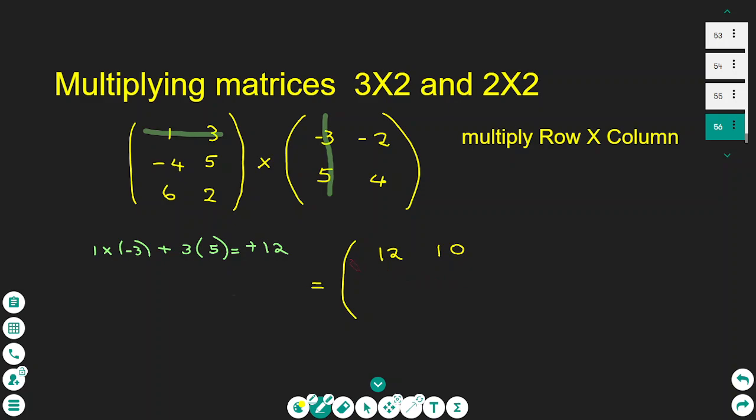I go to the second row and I do the same thing. Negative 4 times negative 3 plus 5 times 5, and this gives you the number 37, which I write here.